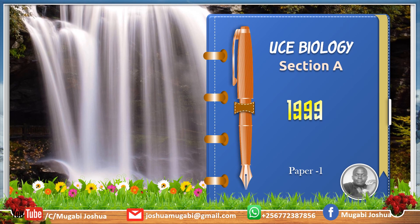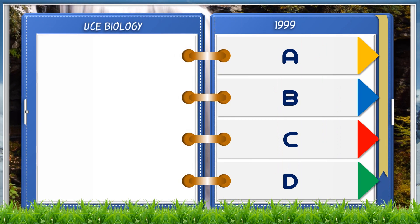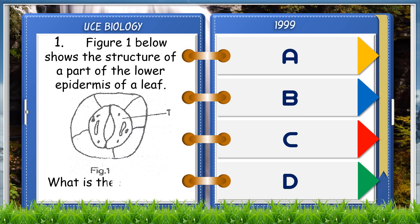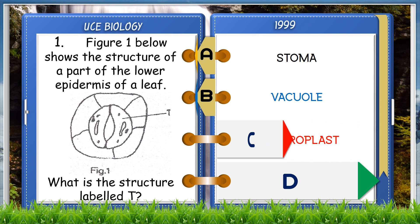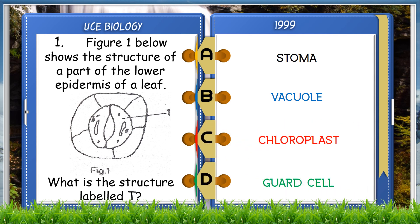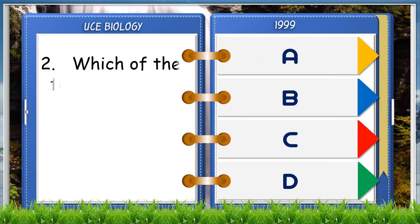Hello, my name is Joshua Mgabi. I welcome you to UCE Biology Section A, 1999. Figure one below shows the structure of part of the lower epidermis of a leaf. What is the structure labeled T? A. Stoma, B. Virtual, C. Chloroplasts, D. Guard cell. The answer is D, guard cell.